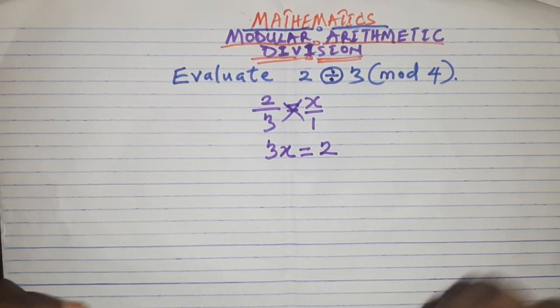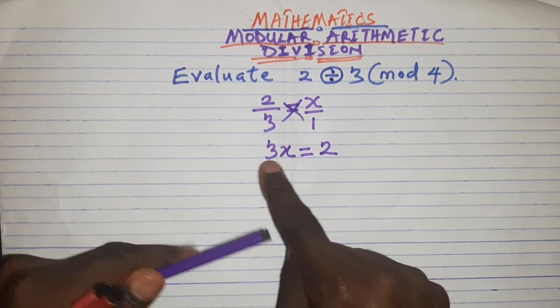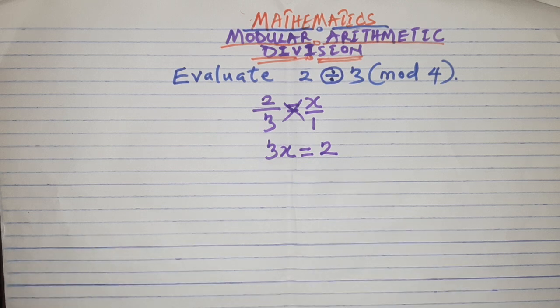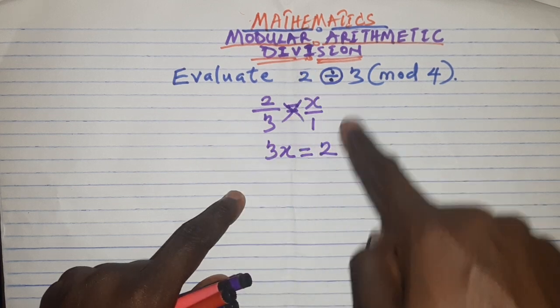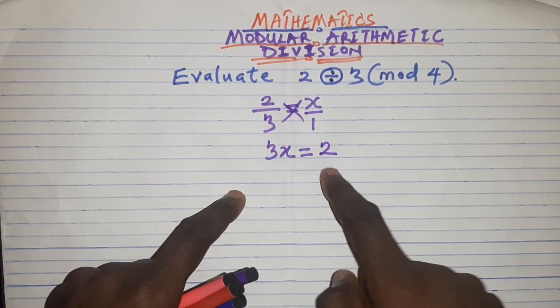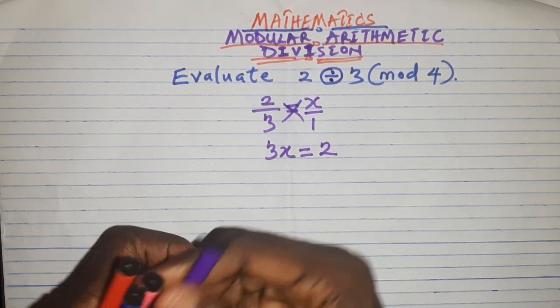Of course, you know the next thing to do is divide both sides by 3, but if you divide both sides by 3 in this case you are going to be confusing yourself because 3 will not be able to divide 2.